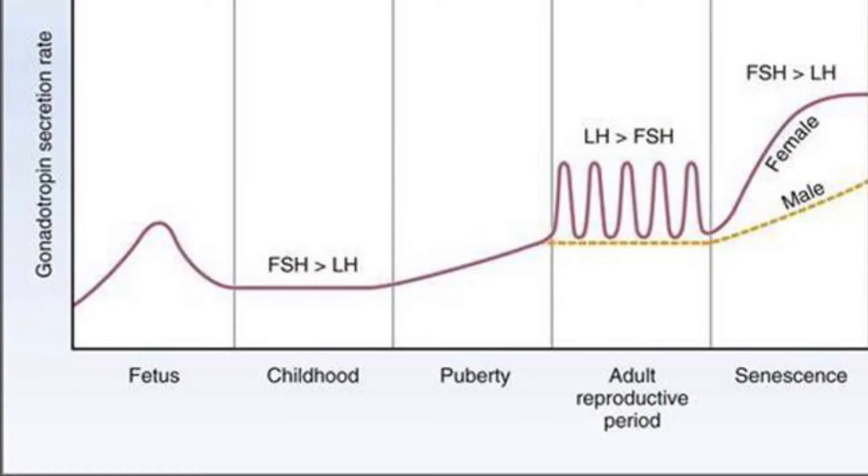In childhood, gonadotrophin-releasing hormone levels are low. As puberty begins, GnRH levels start to rise.